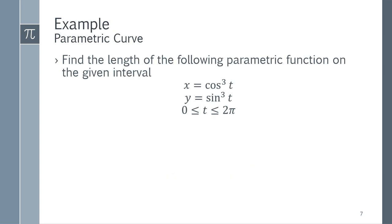So an example of this, if I'm given the parametric function, here: x equals cosine cubed of t, y equals sine cubed of t, on the interval from 0 to 2π, and I want to find the length of this.